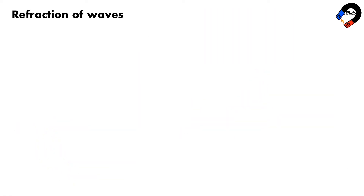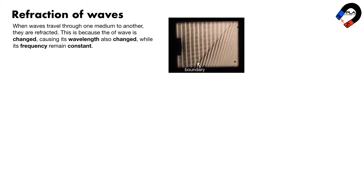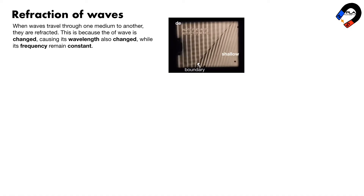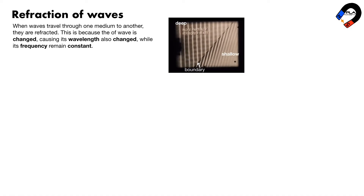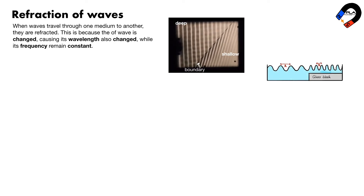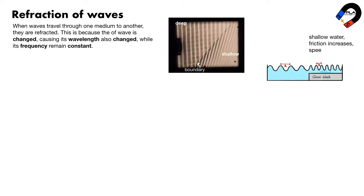Refraction of waves: when waves travel from one medium to another they are refracted. This is because the speed of the wave changes, causing its wavelength to also change, while its frequency remains constant. In a ripple tank demonstration, a glass block is placed in the shallow water area. Water waves travel slower in shallow water due to increased friction, so the wavelength also decreases while frequency remains constant.